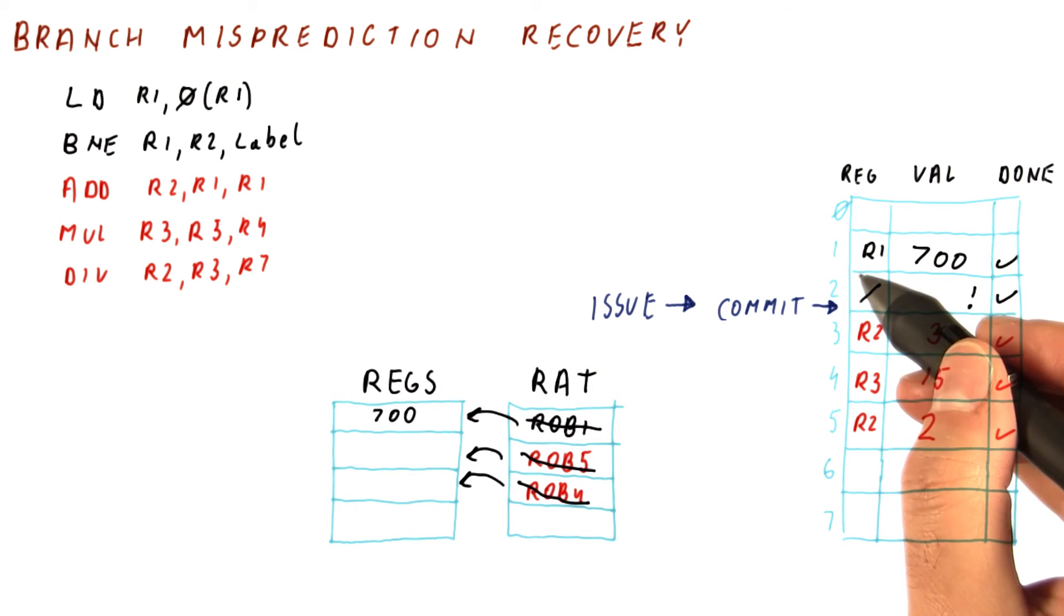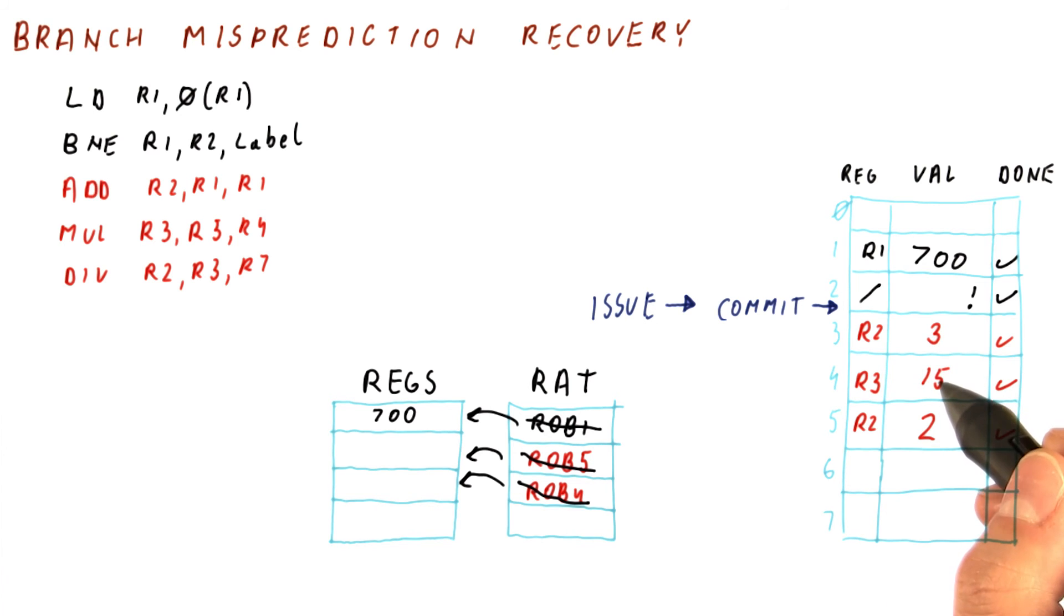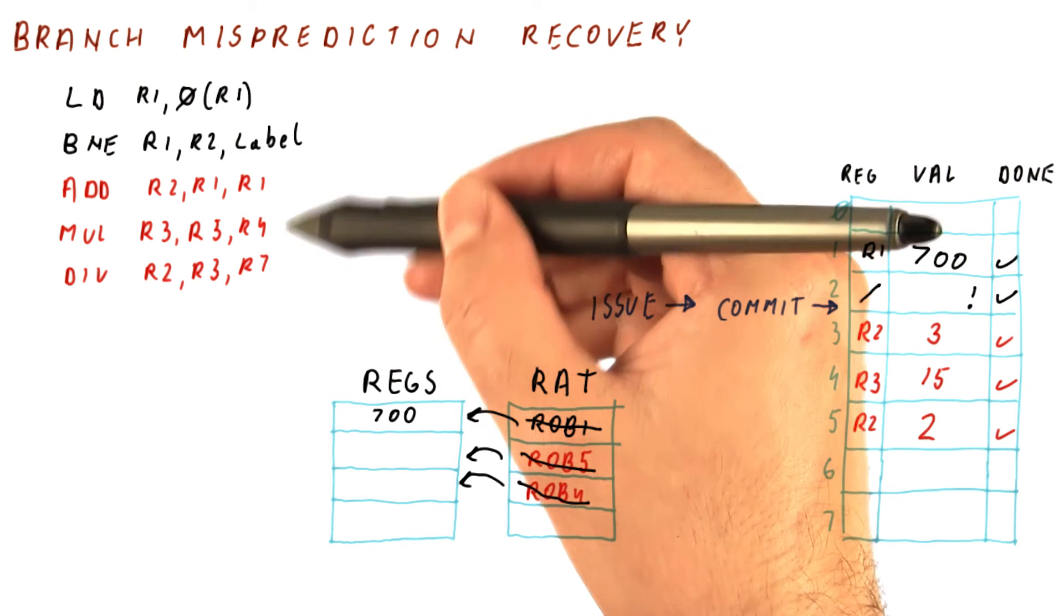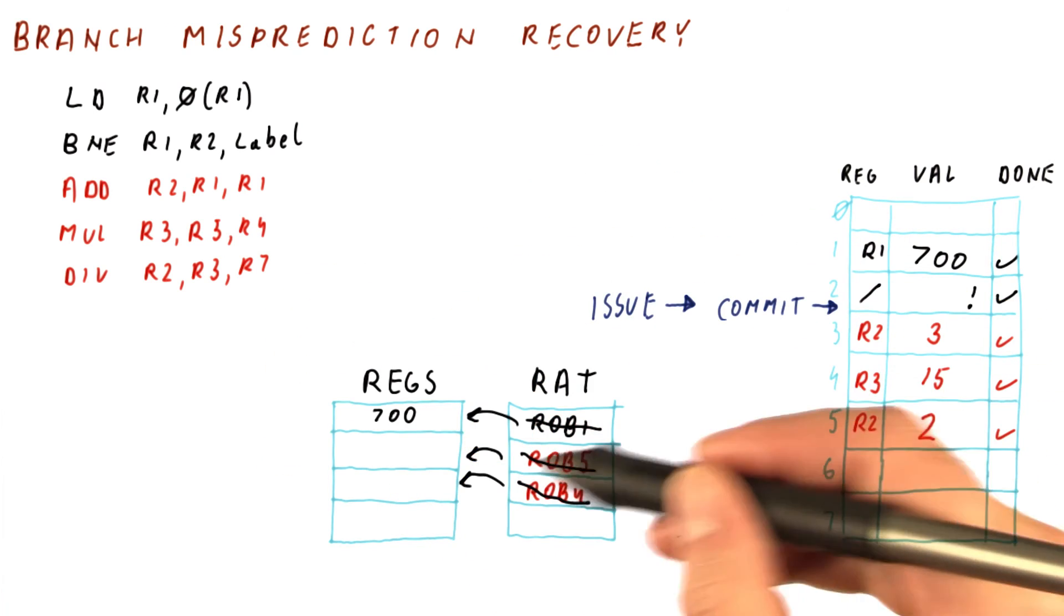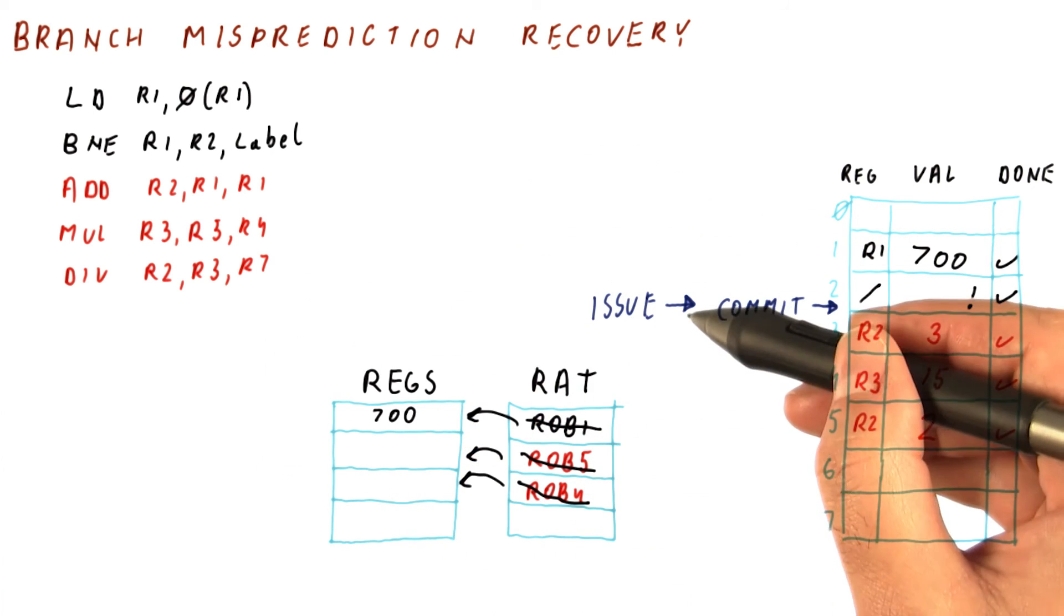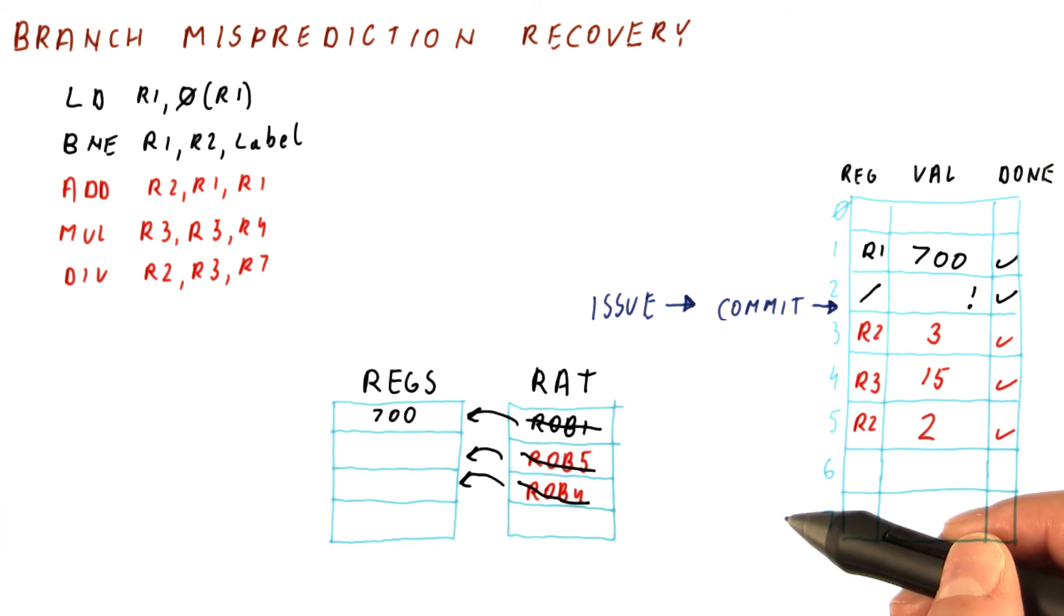So now, it looks like these instructions have never executed or issued for that matter. And we can begin fetching from the correct place, updating the renaming as a result of that, and updating the issue pointer as a result of that.